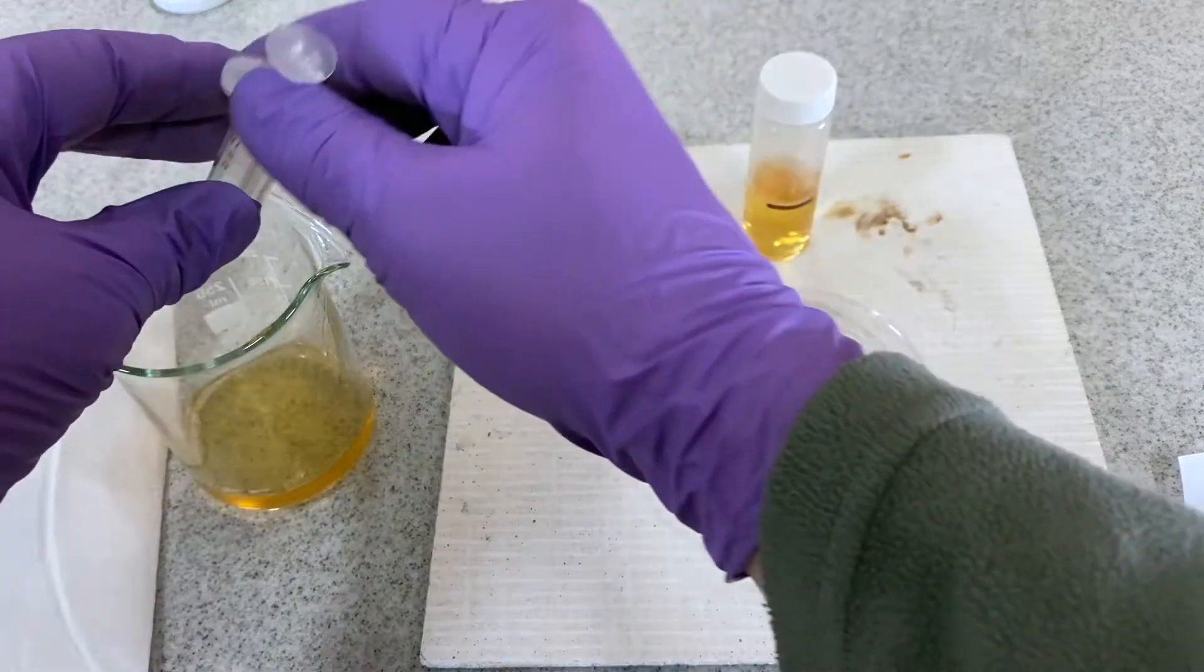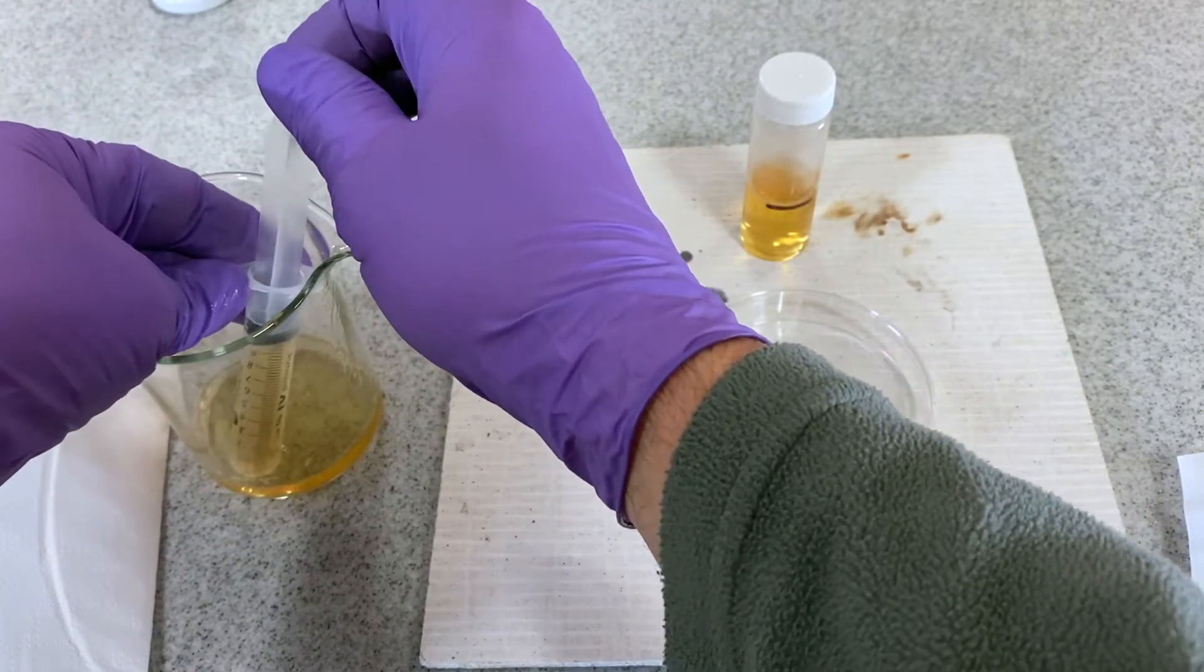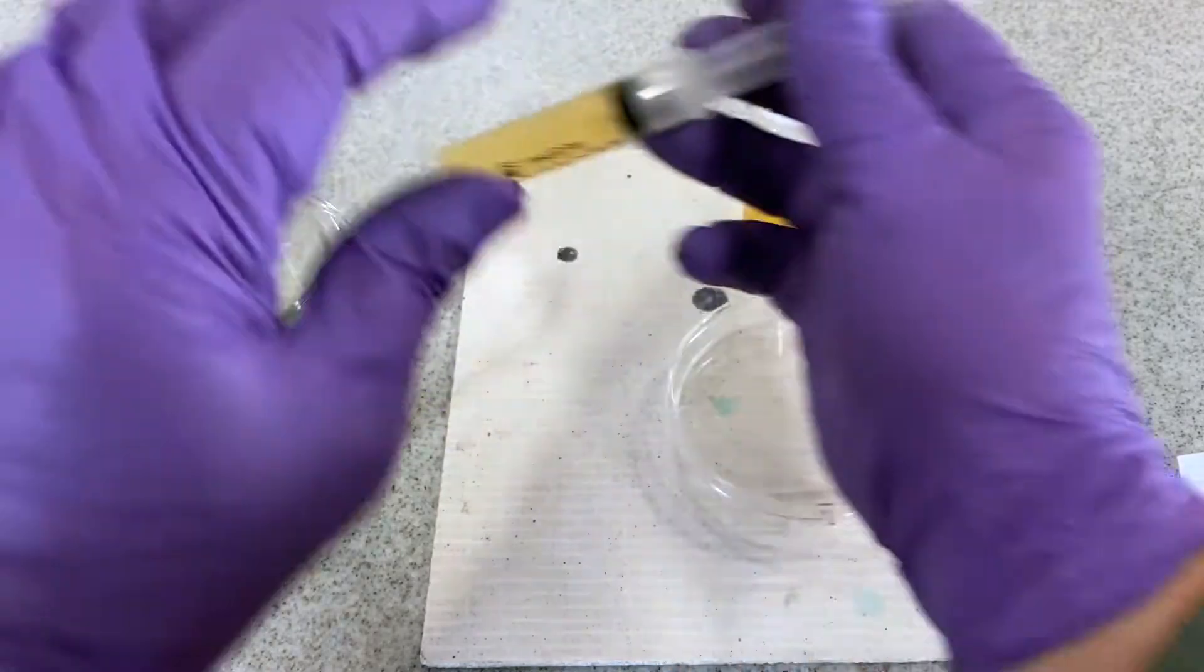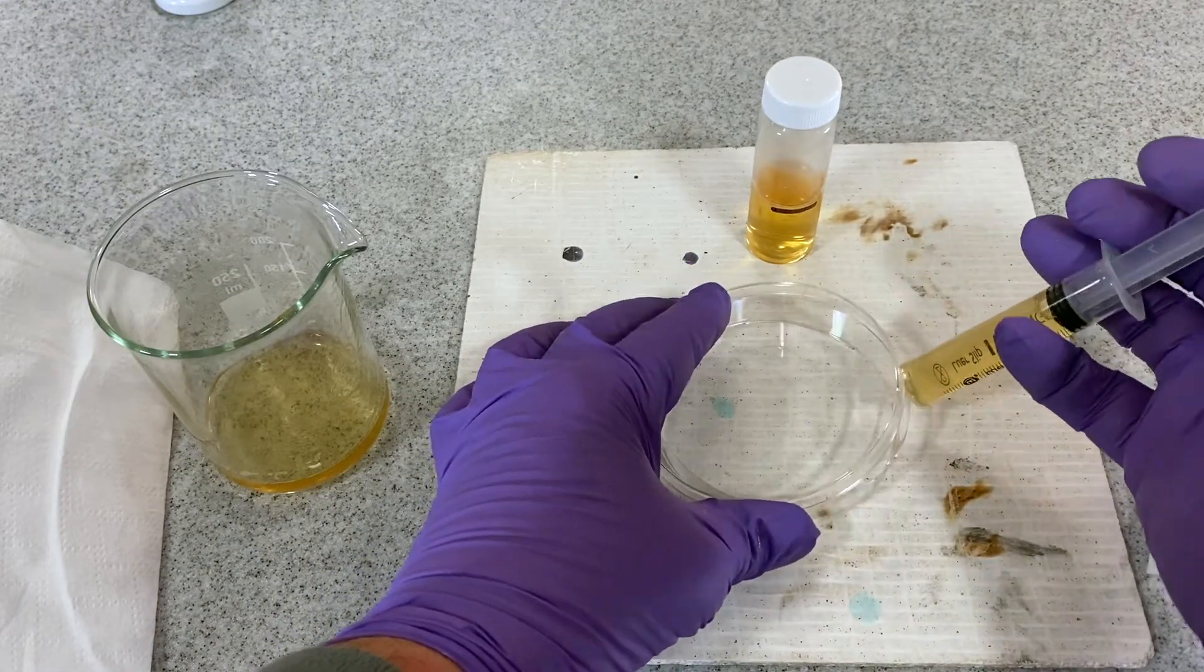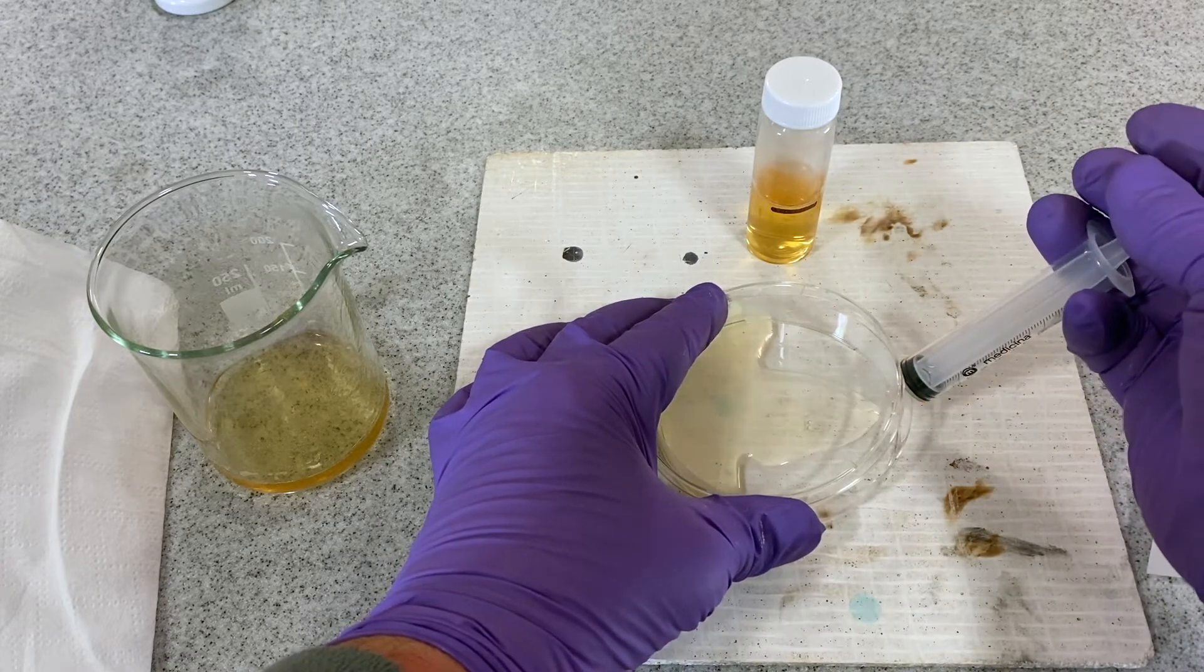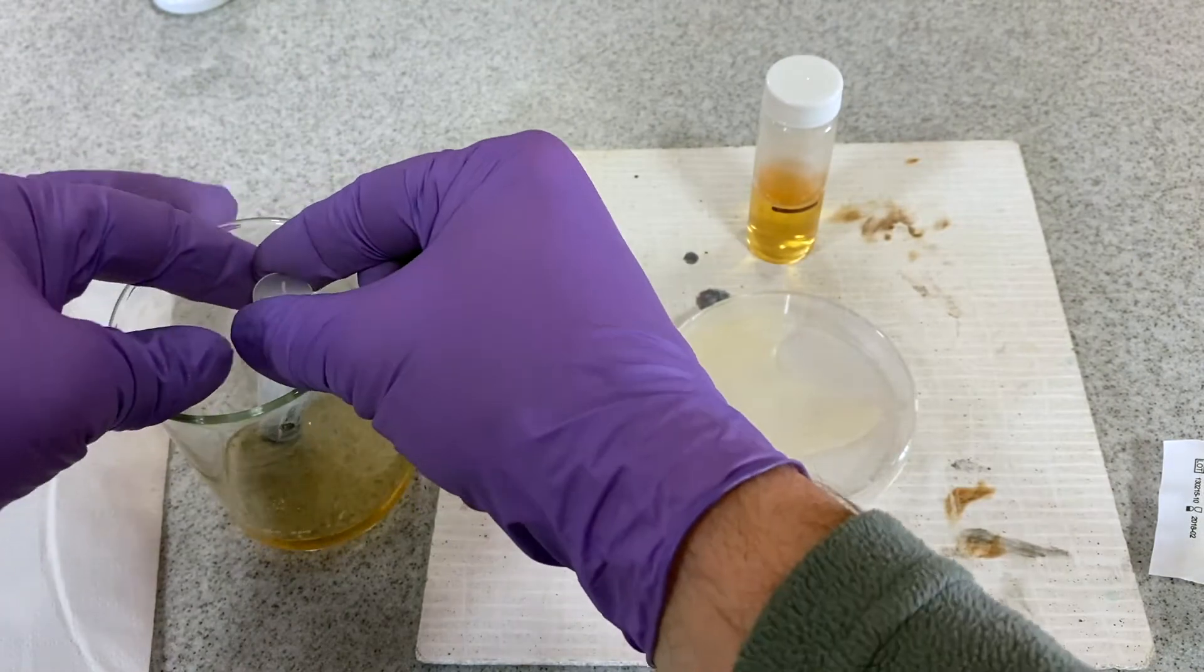When transferring the agar medium into a petri dish, it's much more efficient to use a 10ml syringe. This allows the plate to be filled without removing the lid completely, thus avoiding cross-contamination. The technique used is to slide the lid slightly to one side.